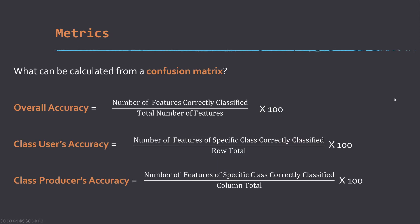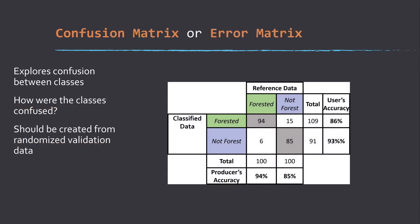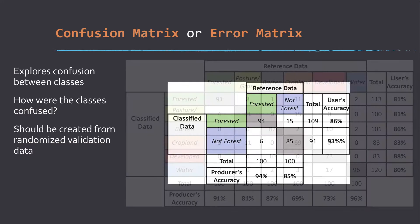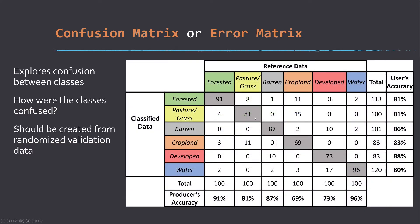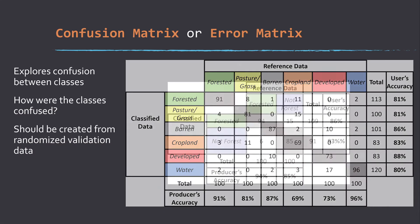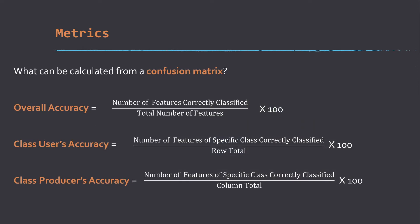From the confusion matrix, you can generate a measure of overall accuracy, which is just simply the number of samples correctly classified divided by the sum of the entire table. You would effectively take this diagonal, sum all those up, and then divide by the sum of the entire table. So that's the overall accuracy.